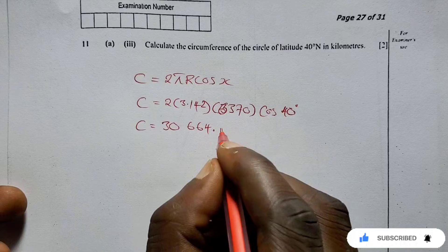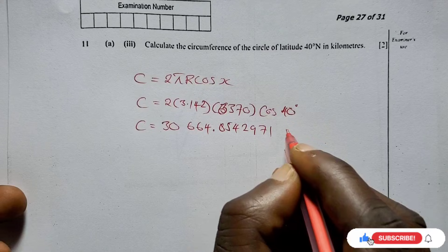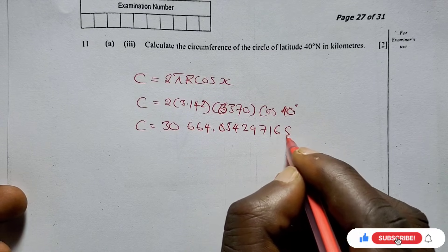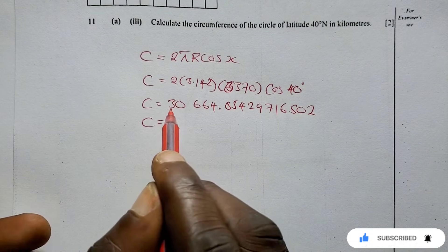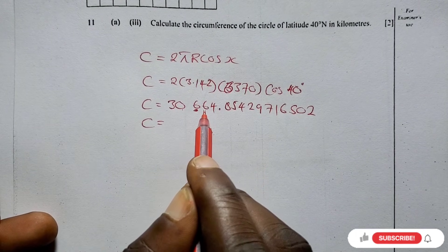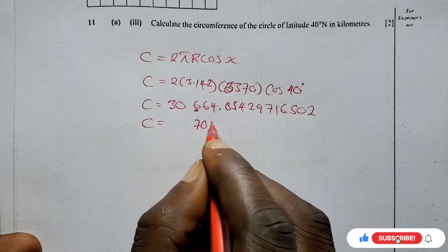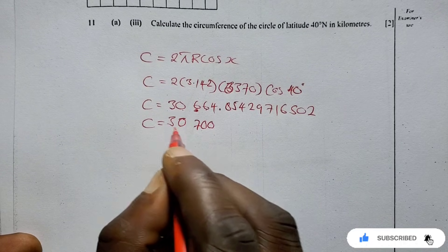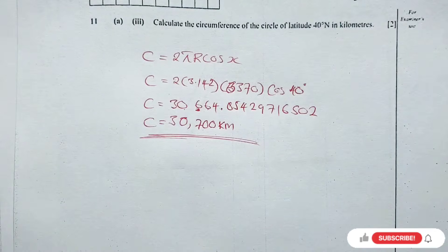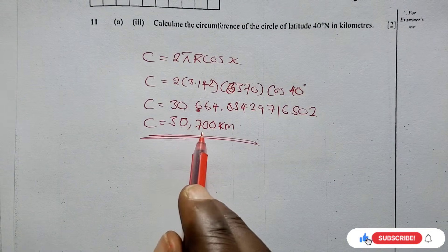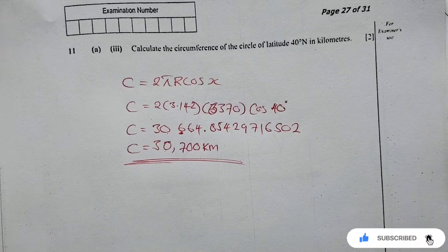And we are getting 30,664.054297165502. Let's leave this one to three significant figures: one, two, three. This is greater than five, so we're going to add one to this one and this one becomes seven, then this one becomes zero and the other one zero. So we have 30,700 kilometers as our circumference of the circle of latitude.